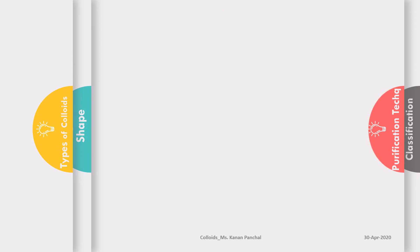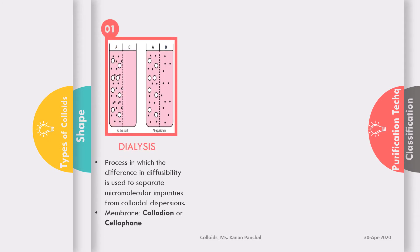The first purification technique is dialysis, which follows the principle of diffusibility — the ability of molecules to flow from a region of higher concentration to lower concentration. Two chambers are separated by a membrane, usually made of collodion or cellophane, which allows passage of only sub-colloidal or molecular range particles. The sub-colloidal particles move from compartment A to compartment B until equilibrium is achieved, leaving the colloidal dispersion in compartment A. To hasten this process, liquid from compartment B can be continuously removed to maintain a high concentration gradient.